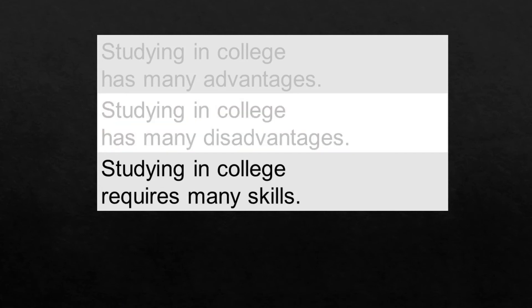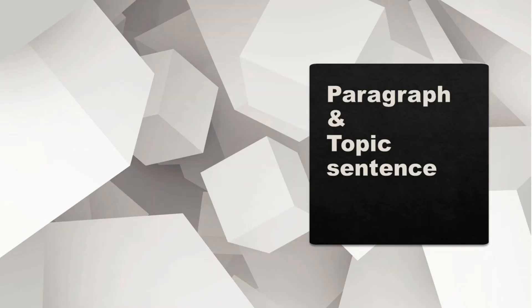For example, if we have a topic sentence that says 'Studying in college requires many skills,' then the paragraph should discuss only the required skills needed for studying in college. In conclusion, since a paragraph is a group of sentences that revolve around only one main idea found in the topic sentence, the topic sentence holds the paragraph together by requiring all sentences in that paragraph to discuss only what the topic sentence says.